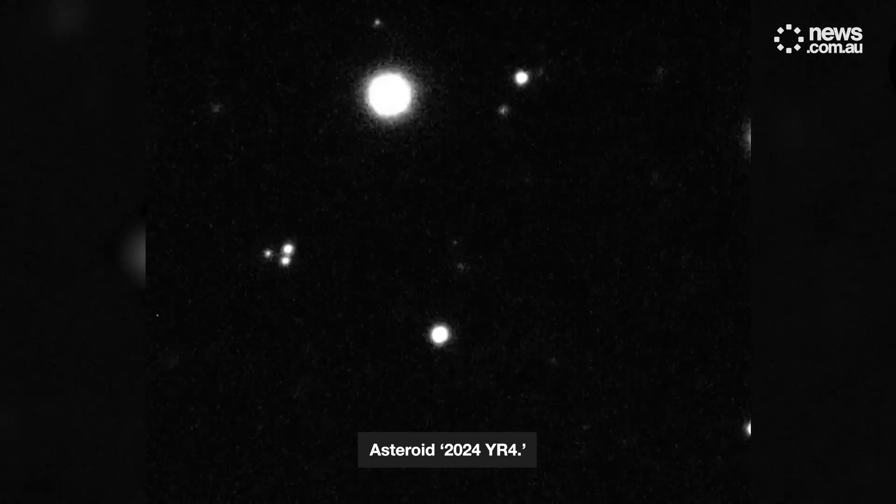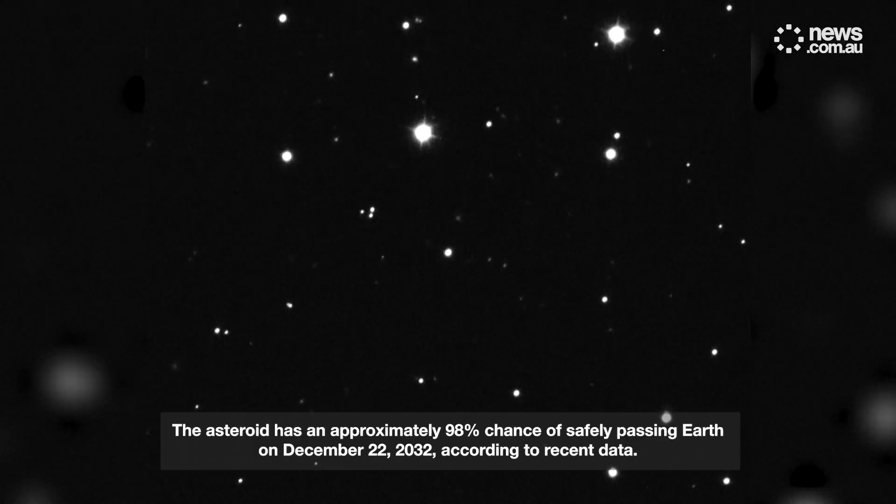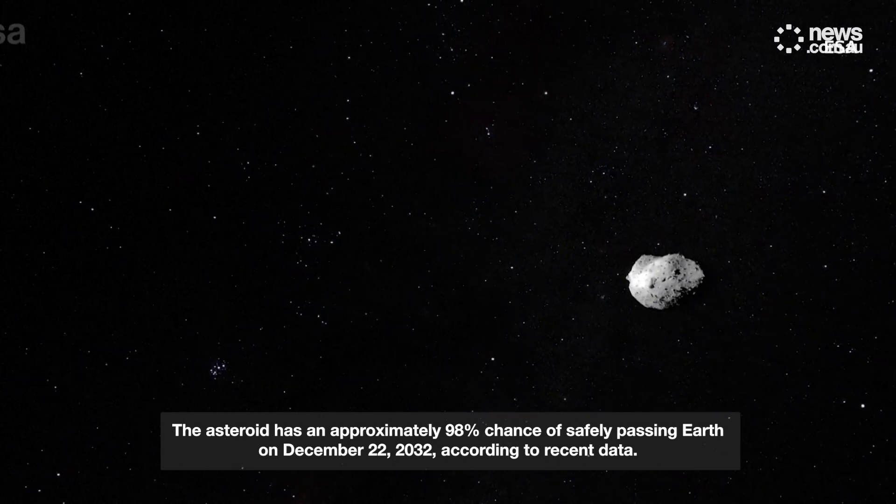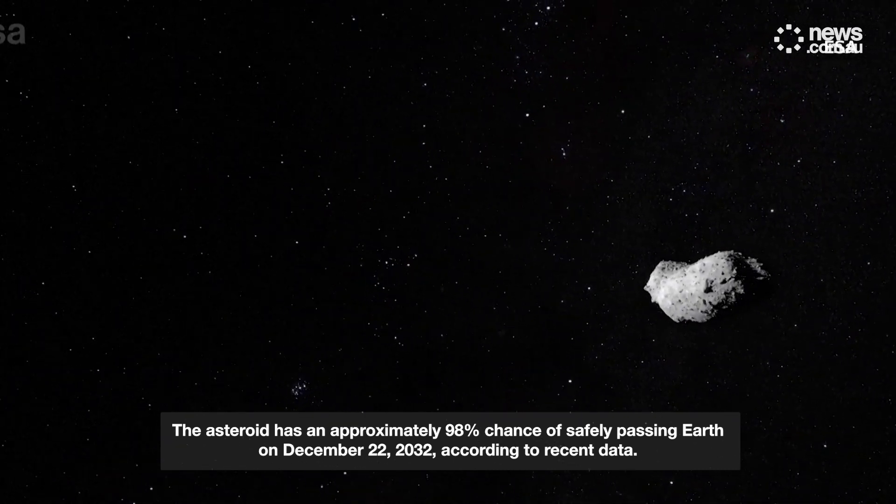Asteroid 2024 YR4 has an approximately 98% chance of safely passing Earth on December 22, 2032, according to recent data.